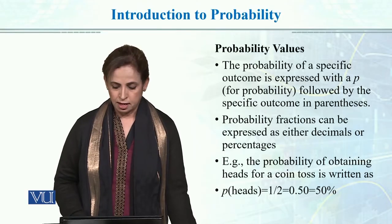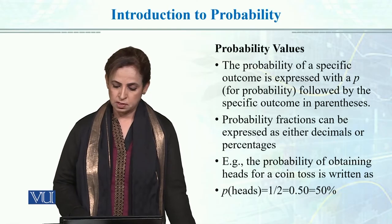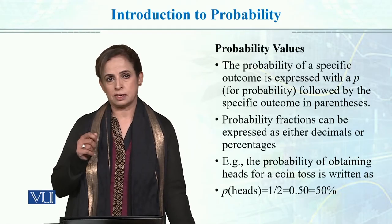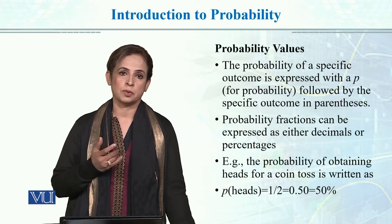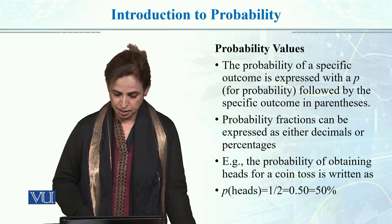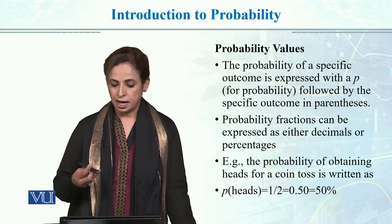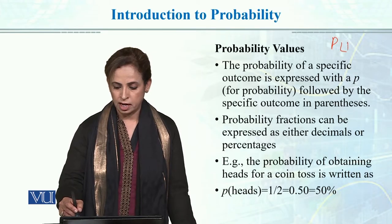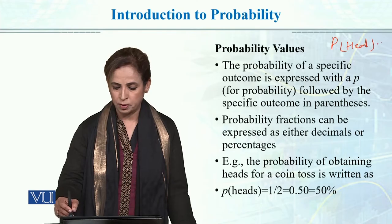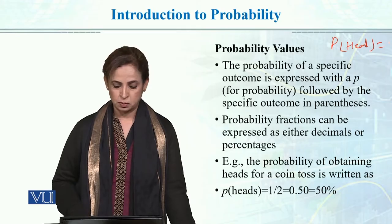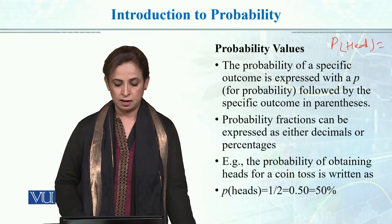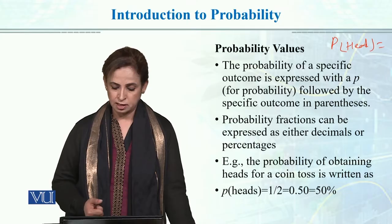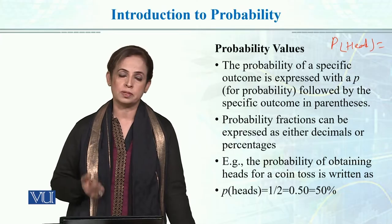The probability of a specific outcome is expressed with a P, followed by parentheses containing the event for which we calculate the probability. For example, we write P(head) and then express it numerically. A probability fraction can be expressed either as a decimal or as a percentage.